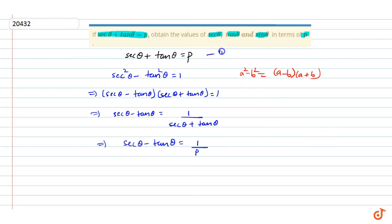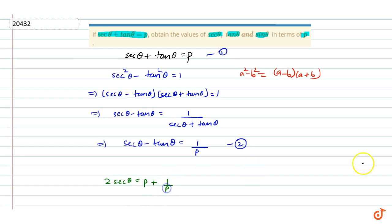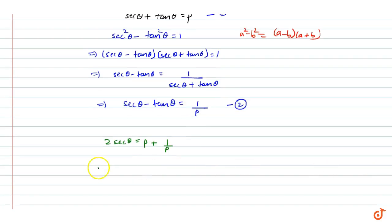This is equation 1 and that is equation 2. If we add the two equations, we get 2 sec theta equals to P plus 1 by P. That is, sec theta equals to P squared plus 1 upon 2P. So this is our sec theta value.